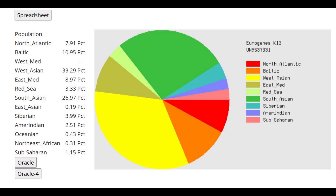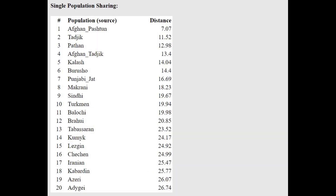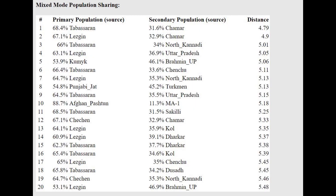Here are his results with Eurogenes K13. Notice how he's scoring 8% North Atlantic and 11% Baltic — this is basically Northern European admixture that he had. With the Oracle for Eurogenes K13, he's closest to Pashtuns and can be modeled as a mixture of Tabasarans and Lesghins — people in the northeast Caucasus — with Chamar people, who are South Asian.